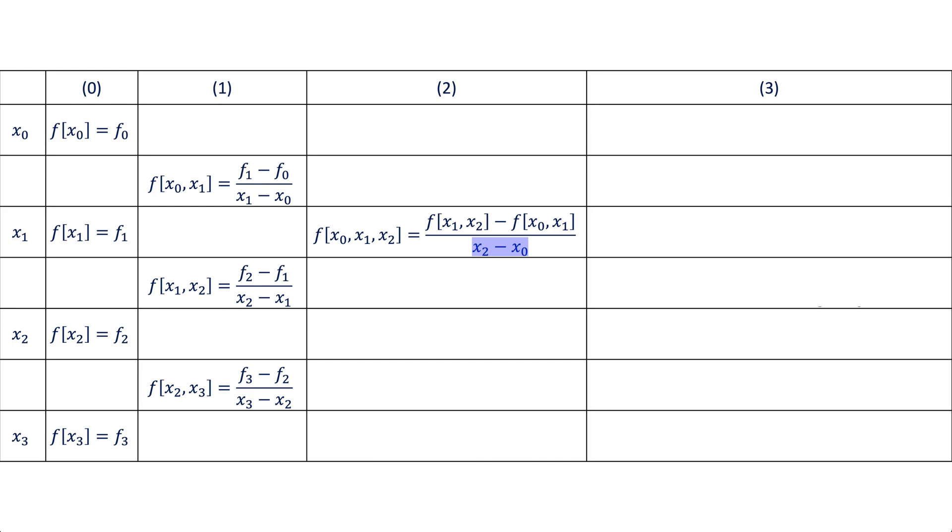Also, in order to be sure, notice that the x difference is between the values of x having the largest and smallest subscripts in the brackets of f. The next difference is calculated exactly in the same way. Finally, the last difference in column three will be between the f values from column two divided by the difference between x zero and x three.